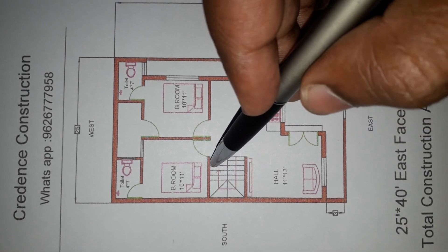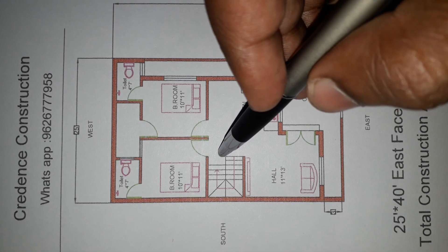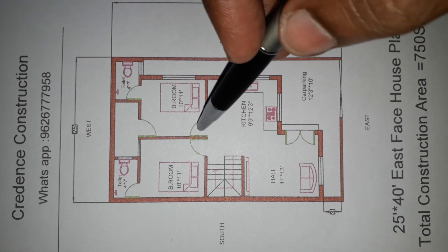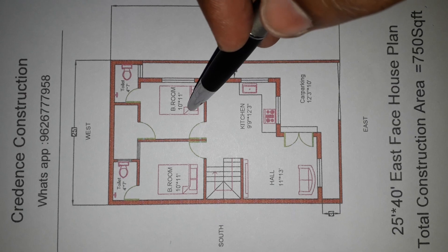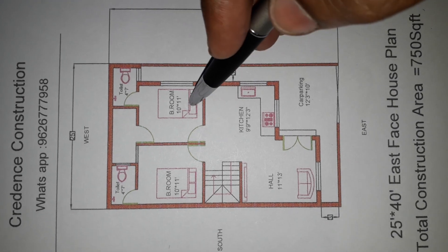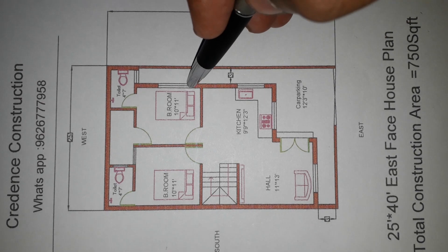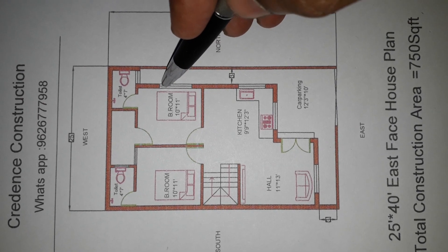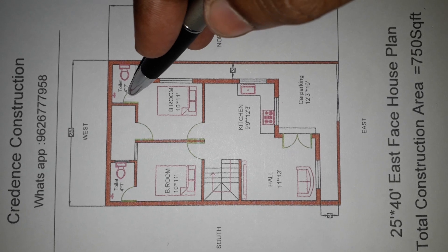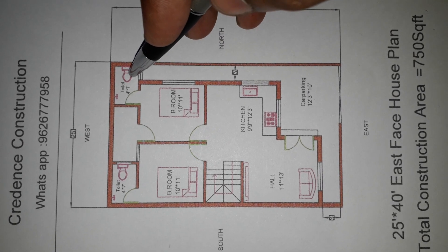The inner staircase size is 6 feet by 10 feet, leading to the first floor master bedroom. The master bedroom size is 10 feet by 11 feet, with one window. The attached bathroom is 4 feet by 7 feet with a western toilet.